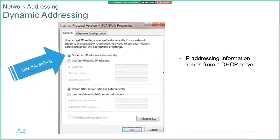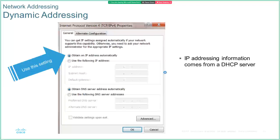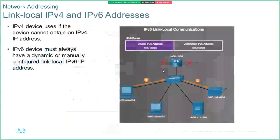Dynamic addressing is so much easier to configure and is our default setting on devices — 'obtain an IP address automatically' and 'obtain a DNS server automatically'. When the machine powers on it sends out a request to the DHCP server saying: give me an address, tell me my default gateway, tell me where I can find the DNS server.